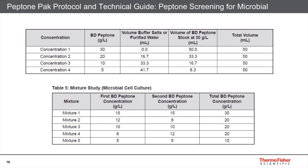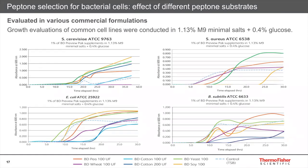Once the peptone has been identified, it is critical to characterize the culture to establish a baseline of performance and identify key process drivers that can be monitored and controlled during manufacturing. This slide shows how different peptones can have different effects on growth depending on the microbe. These evaluations were done with four different microbes: E. coli, Bacillus, Staphylococcus aureus, and the yeast Saccharomyces cerevisiae.